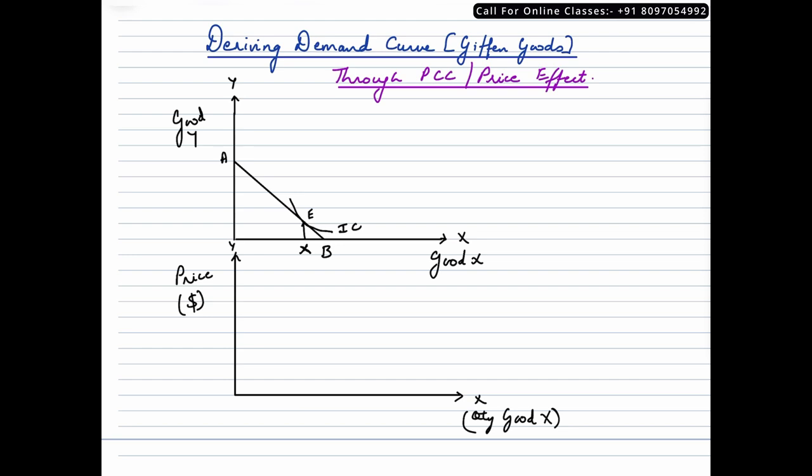And as I mentioned, it's an exception to the law of demand. It means that as the price of this Giffen good increases, the quantity demanded for Giffen goods would also go up. And as the price of Giffen good would fall, the quantity demanded of Giffen good would also fall. It violates the law of demand.